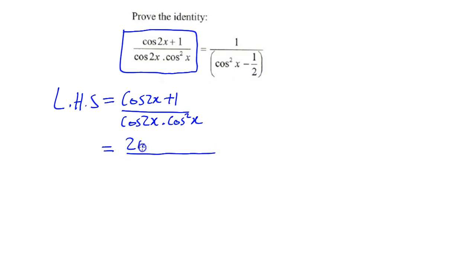So it's going to be 2 cos squared x minus 1 plus 1. The minus 1 and the plus 1 now cancel off.